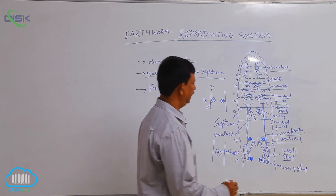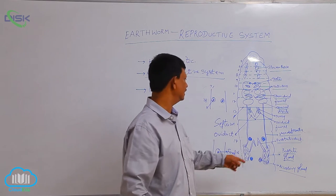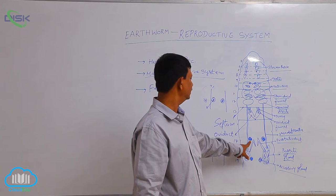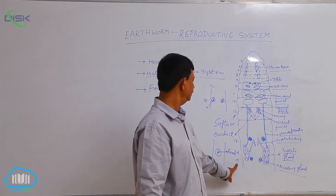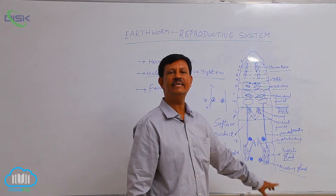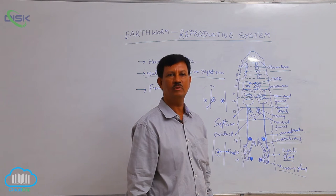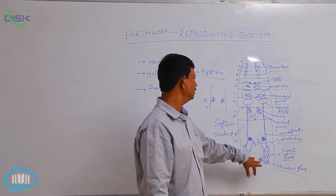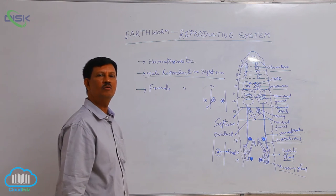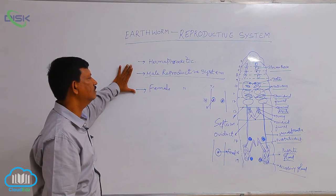There are two pairs of accessory glands also present in the earthworm. The first pair is situated in the 17th segment and the second pair in the 19th segment. They secrete some chemical substances which are useful at the time of copulation. They open to the outside by pores known as genital pores.